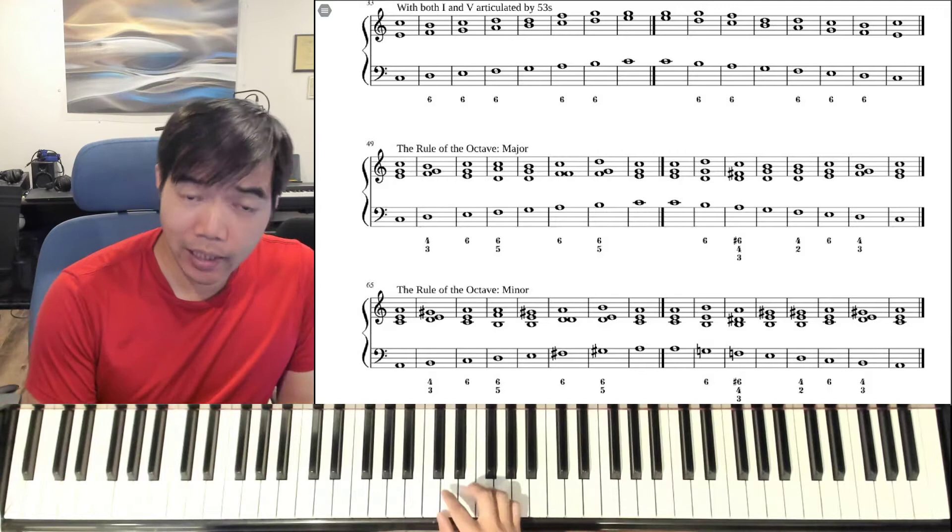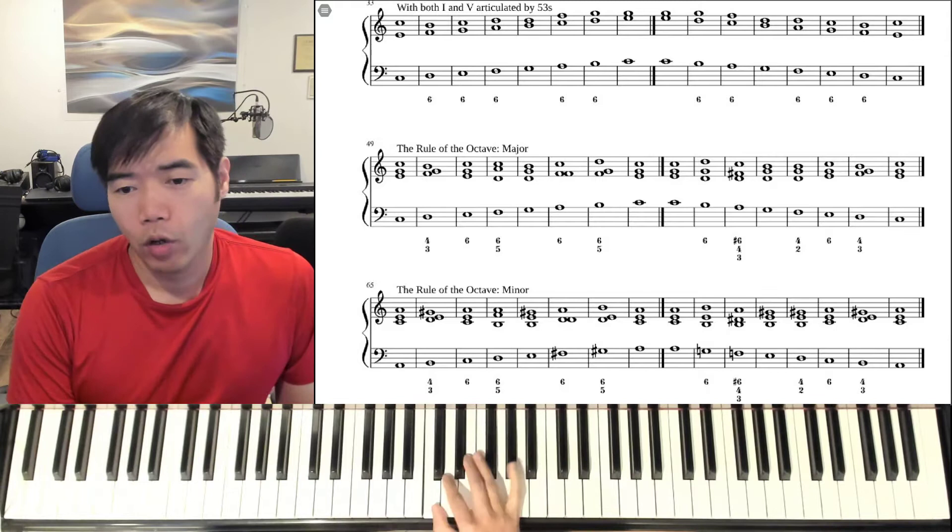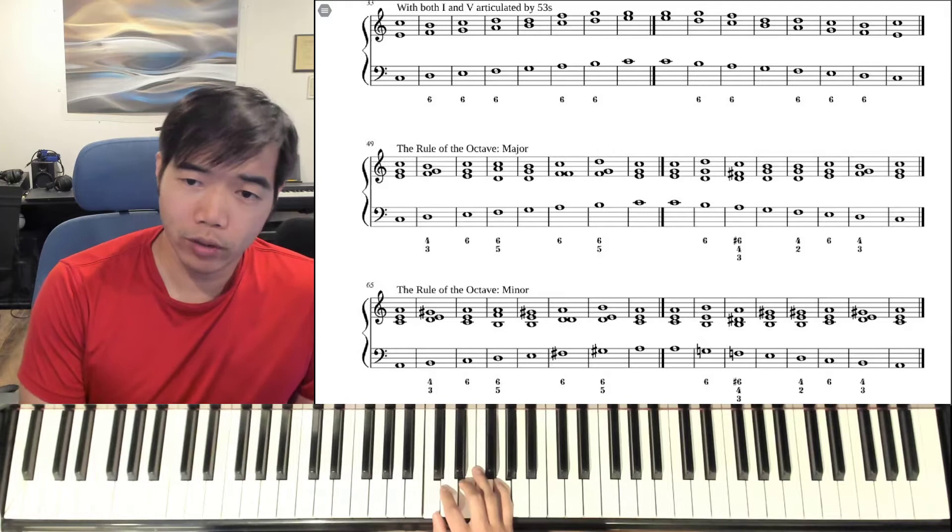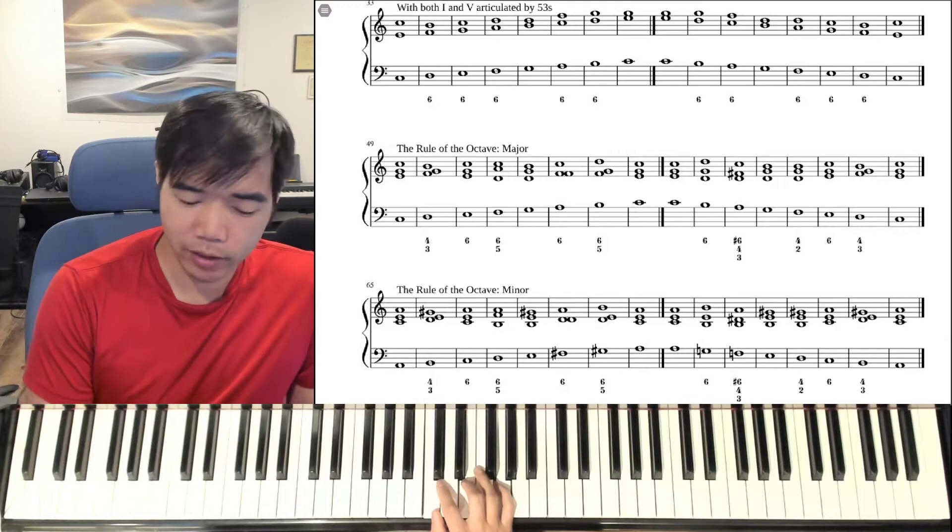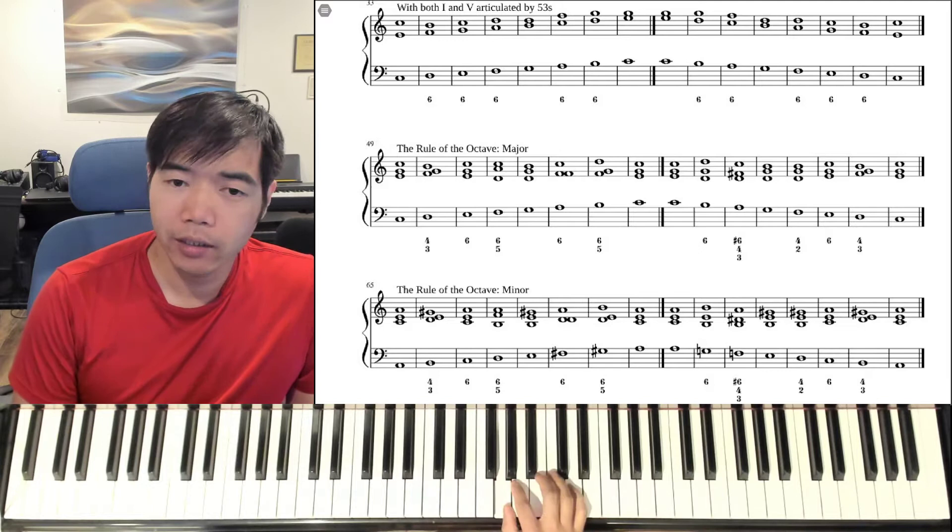What that refers to is, in any given scale, let's say C major for example, we have a tonic. That's the first scale degree, and when you build a triad or a larger chord above that, that becomes the tonic chord, in this case C major, the one chord. And if we go to the fifth, one, two, three, four, five, a fifth above,